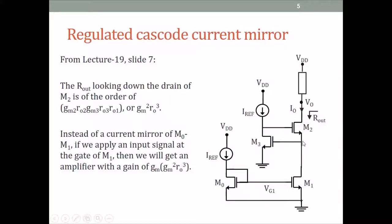The output resistance of simply M1, M2 is GMRO squared. But when we add this common source amplifier in the feedback path, then the resistance becomes GM² RO³. Now, suppose we remove the reference current source and apply an input voltage at the gate of M1. Then this circuit, with the input here and the output here, is an amplifier that has a gain of the order of GM³ RO³.